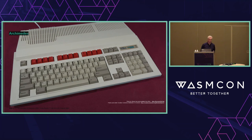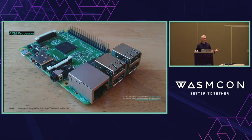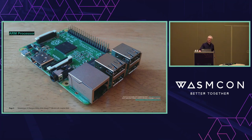None of those processors quite fit the bill, so they decided to design their own. They built the Archimedes around it. We don't see the Archimedes today, but the company behind it was called Acorn, and the chip they designed was called the Acorn RISC Machine — the ARM processor — which we know today from the Raspberry Pi, your mobile phone, and if you're fortunate enough, your M1 or M2 Mac. That processor was hugely successful, but not in the original desktop format — in the embedded space.